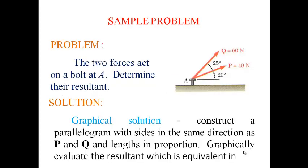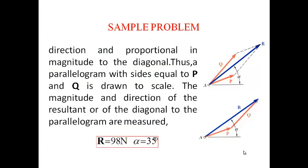For a sample problem, the two forces acting on a board at A, determine their resultant. We can determine by using a graphical and a trigonometric solution. First, graphically construct a parallelogram with sides in the same direction as P and Q and length in proportion. Graphically evaluate the resultant which is equivalent in direction and proportional in magnitude to the diagonal.